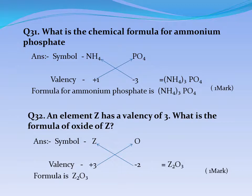Question No. 31: What is the chemical formula for ammonium phosphate? Answer: Symbol NH4⁺ valency positive 1; PO4³⁻ valency negative 3. Formula for ammonium phosphate is (NH4)3PO4.